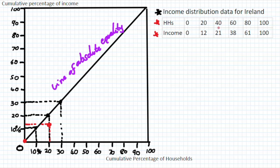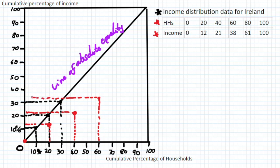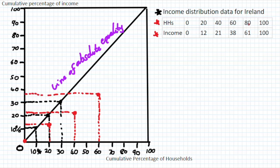40% of households in Ireland hold 21% of the wealth, giving us a third point on the Lorenz curve. Moving to 60% of households, they hold 38% of the wealth. We plot that point and bring it across to show 38% in terms of income distribution — so at 60% of households, 38% of income is held by this group.